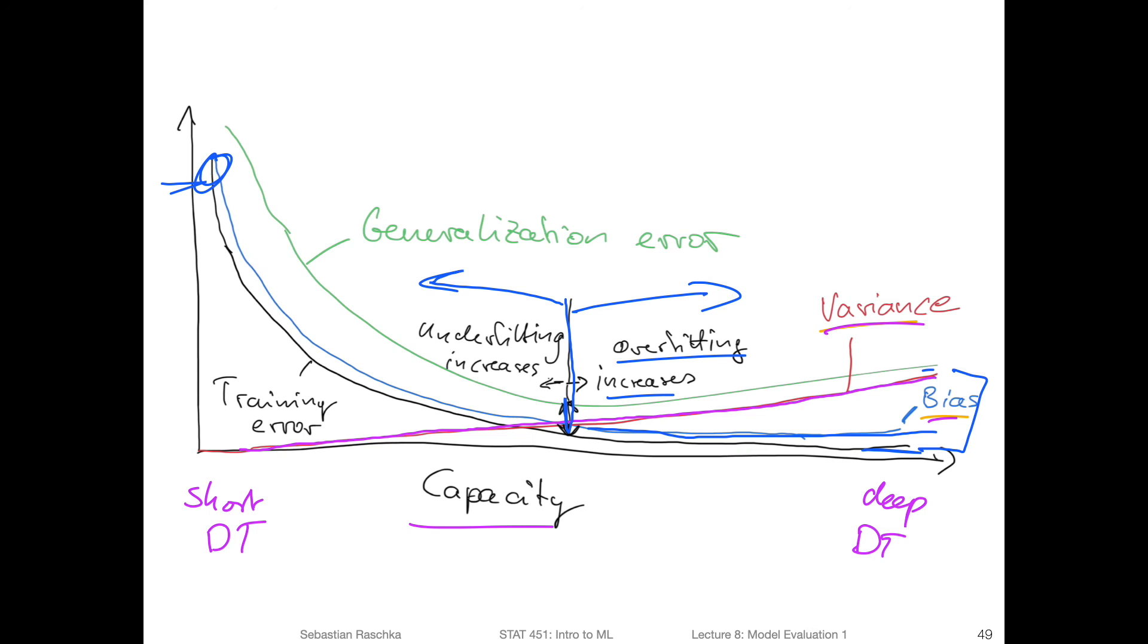So yeah, high bias is correlated to underfitting—high underfitting—and high variance is correlated to overfitting.